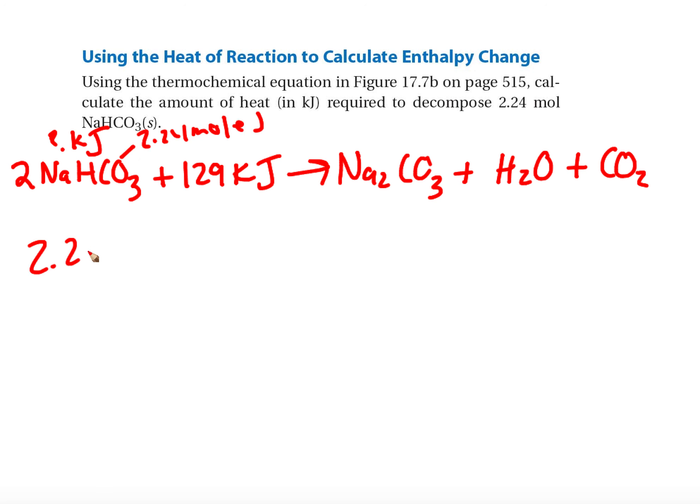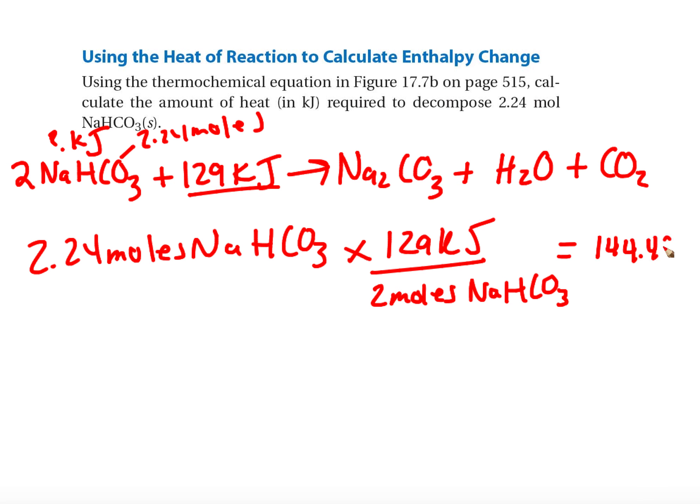We have 2.24 moles of NaHCO3. We know our heat is 129 kilojoules. Now we need to look at our NaHCO3, and it's typically going to be over 1 mole for coefficients of 1, but since we have a 2 in front, it's going to be over 2 moles of NaHCO3. With these types of problems you might be given your starting value in grams. 2.24 times 129 divided by 2 gives us 144.48 kilojoules.